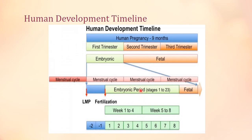The embryonic period is divided into stages from stage 1 — fertilization — to stage 23. The fetal period starts after the eighth week; from the ninth week onward, we call it a fetus, not an embryo, and this fetal period continues until birth. The expected date of delivery can be calculated from the last menstrual period or from the date of fertilization, which is 14 days after the last menstrual period. The whole gestational period can be divided into weeks — 36 to 40 weeks being the normal pregnancy period.